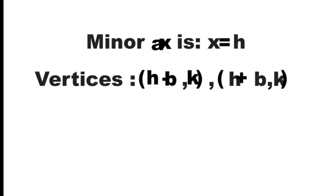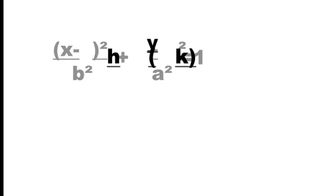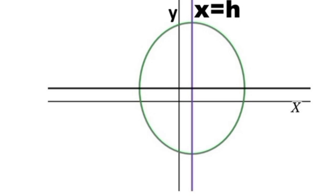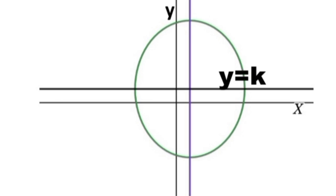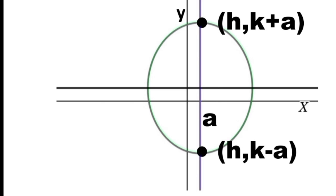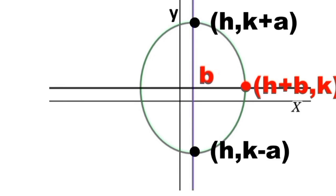Now let's talk about the ellipse with equation: quantity (X minus H) squared over B squared, plus quantity (Y minus K) squared over A squared, equals one. Take note that A squared is over the Y term, so the major axis is parallel to the Y axis with equation X equals H, and the minor axis has equation Y equals K. The upper vertex has coordinates (H, K plus A), the lower vertex has coordinates (H, K minus A). The right side vertex on the minor axis has coordinates (H plus B, K), and the left side vertex has coordinates (H minus B, K).